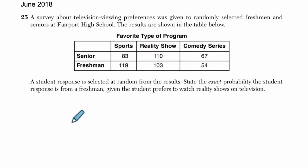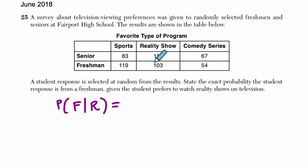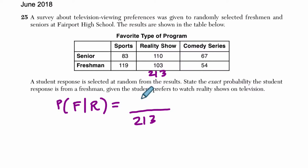So what is even going on over here? The probability that the student response is from a freshman — so the probability that we are picking a freshman essentially — given that the student prefers to watch reality shows. So we pick a freshman from all the people who like reality shows. There are 213 people who said they like reality shows. That's our given. Out of them, there are 103 that were freshmen.